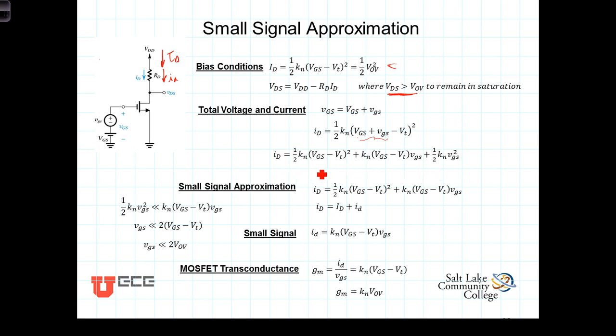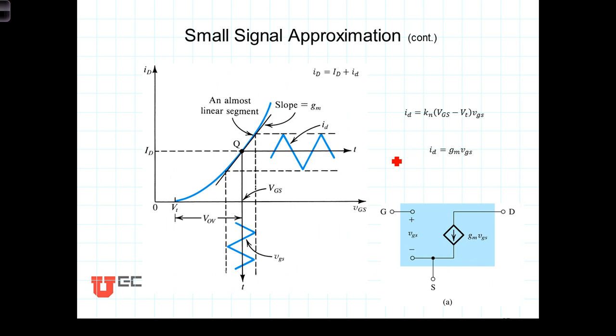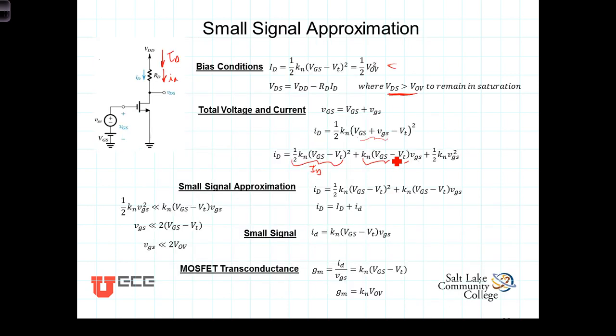This first term here is just I sub d, the bias current. This second term is linearly dependent upon the signal of interest that we're wanting to amplify. The lower case VGS term is being multiplied by a constant - the bias voltage VGS minus the threshold times k sub n. This term out here is proportional to VGS squared. This represents a nonlinear distortion that hopefully we're going to be able to neglect if it's small enough.